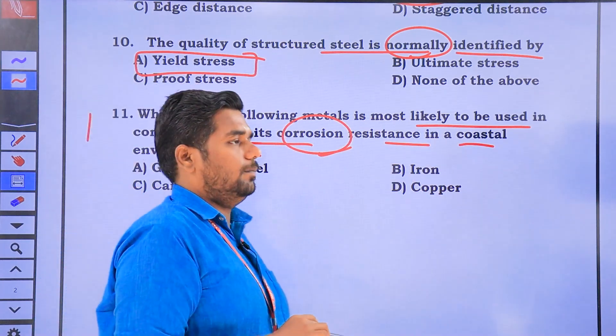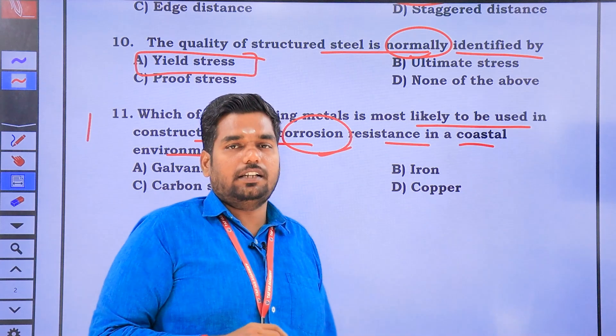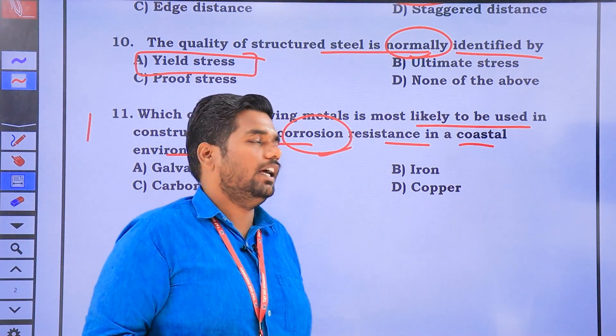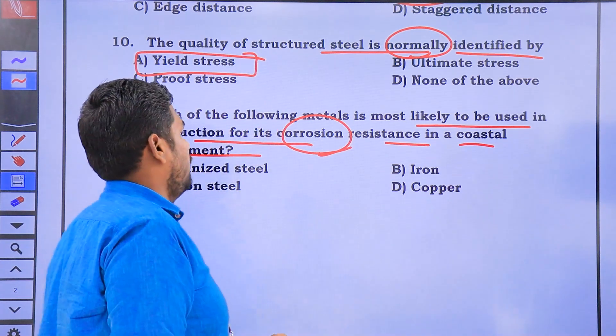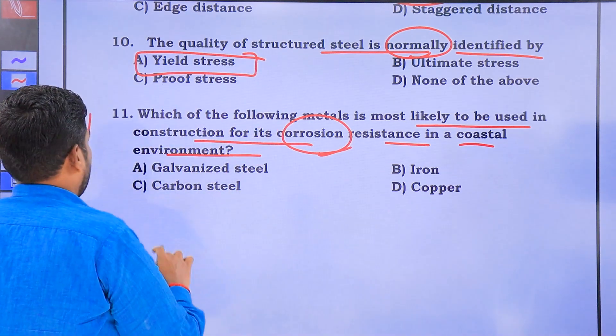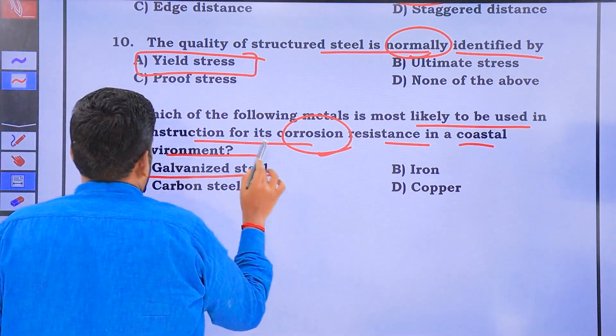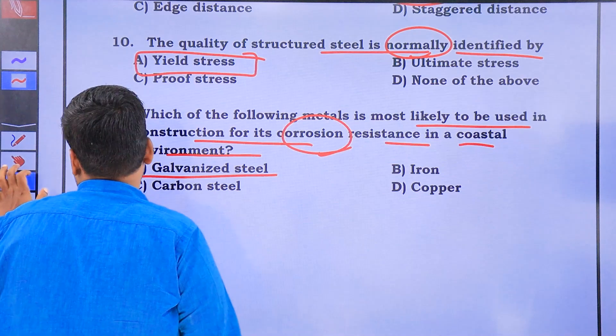In a corrosive environment, we will put a sacrificial metal on the galvanic steel for protection.